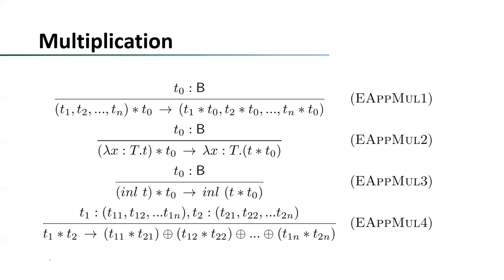The last reduction rule is multiplication. The first three rules are very similar to those for derivatives and integration — they propagate multiplication into the body of terms. The last rule is a bit different, corresponding to the last reduction rules of derivatives and integration. Here we can perform multiplication between tuples, which can be intuitively understood as multiplication between matrices or inner products of vectors.